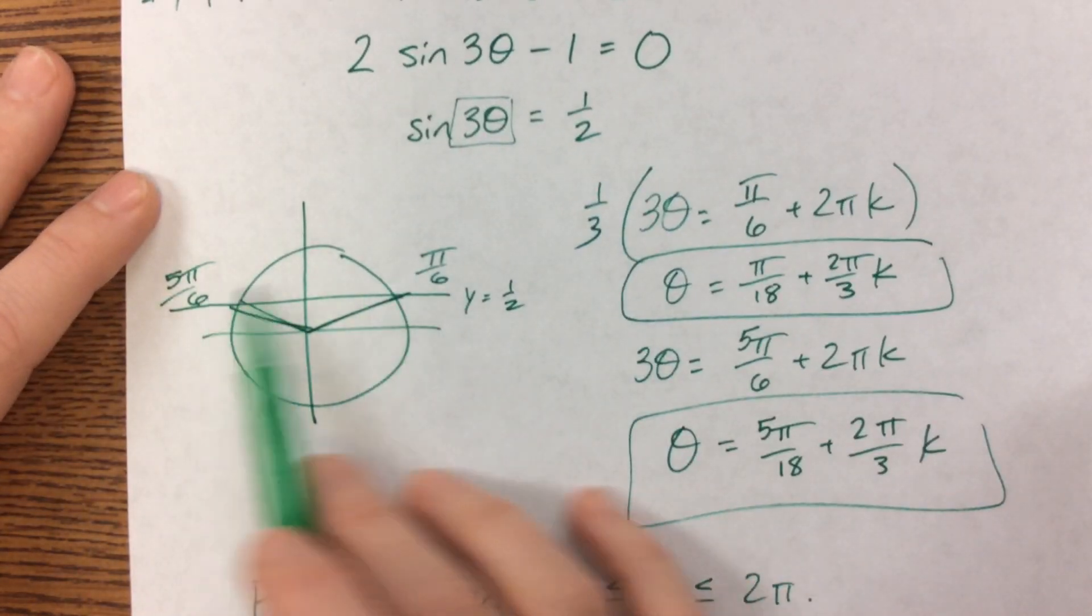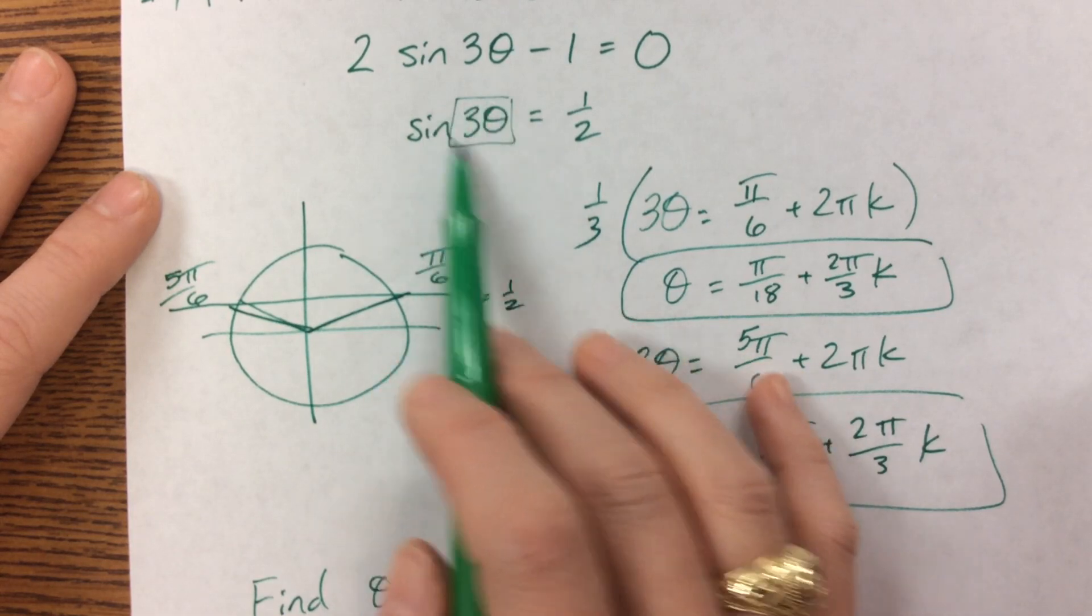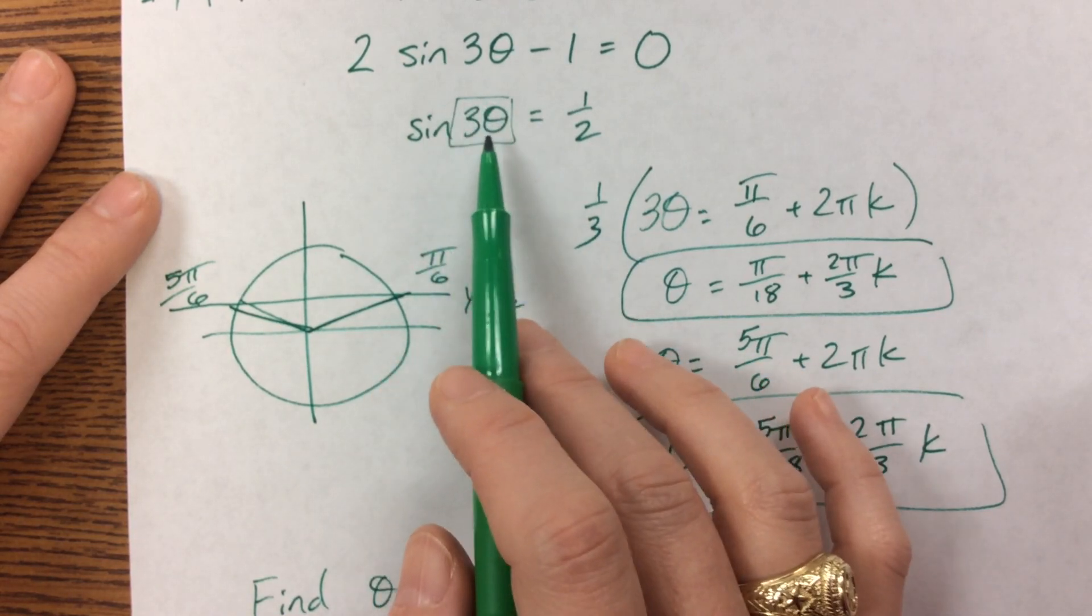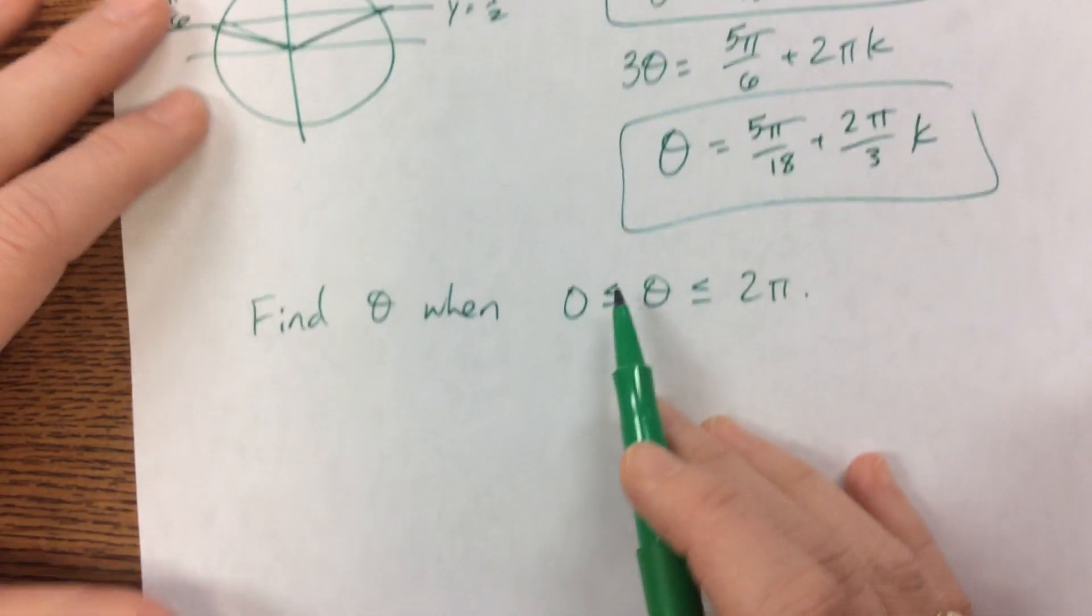So initially, we'd only had 2, but since we're going around the circle, basically we go around the circle 3 times. So we're going to end up having 6 answers in this interval.